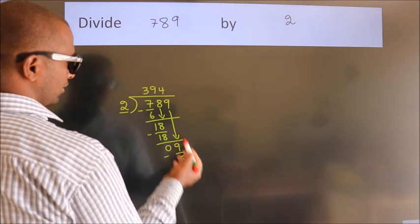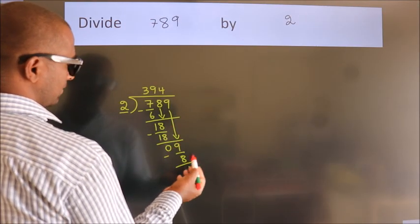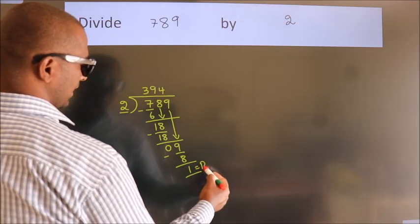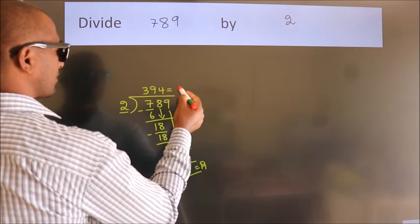After this, no more numbers to bring it down. So we stop here. This is our remainder. This is our quotient.